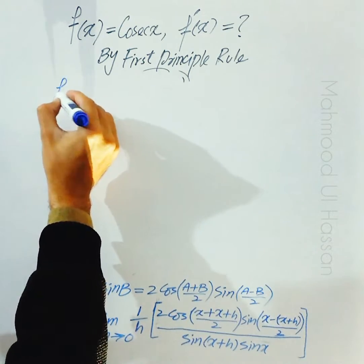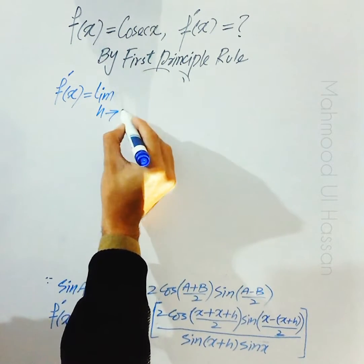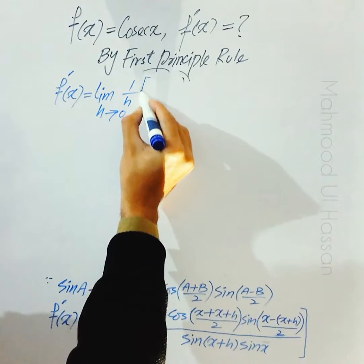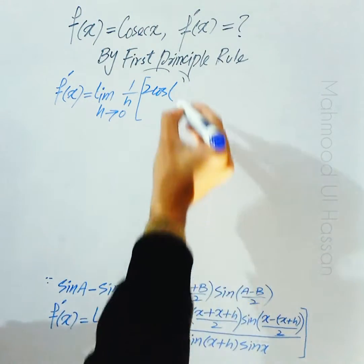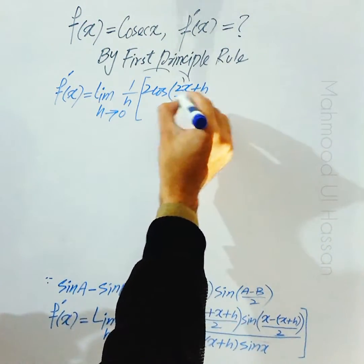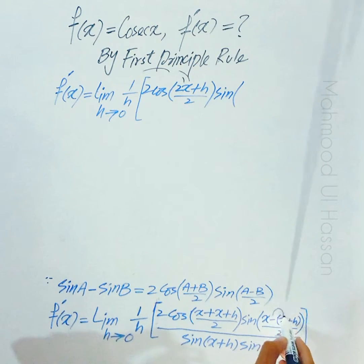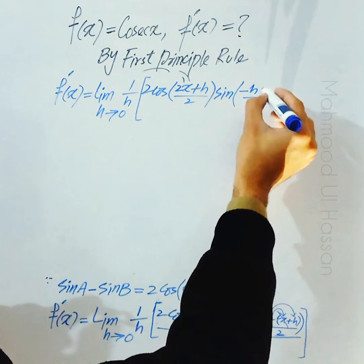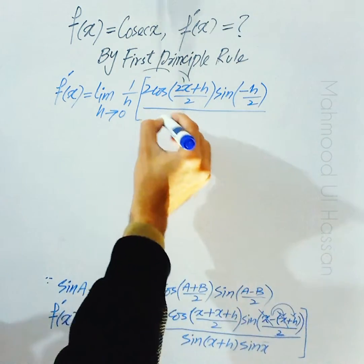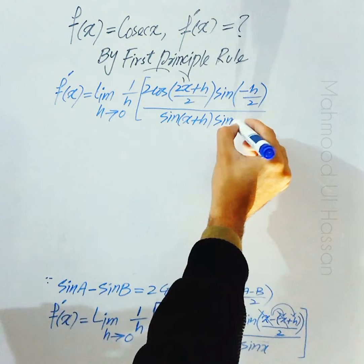Simplify کرتے ہیں: f'(x) = limit h→0, (1/h) × 2·cos((2x+h)/2) × sine((x − x − h)/2)، whole divided by sine(x+h)·sine(x)۔ Minus کو اندر multiply کریں: x − x cancel ہو جاتے ہیں، اور −h رہ جاتا ہے، so sine(−h/2) divided by sine(x+h)·sine(x)۔